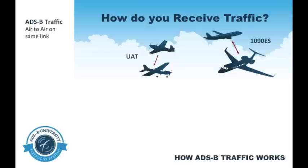The first way is called ADS-B traffic. This works when you have two aircraft that are on the same band and communicate their position directly to each other. For example, a 978 aircraft will communicate directly with another 978 aircraft. The same with 1090 aircraft.